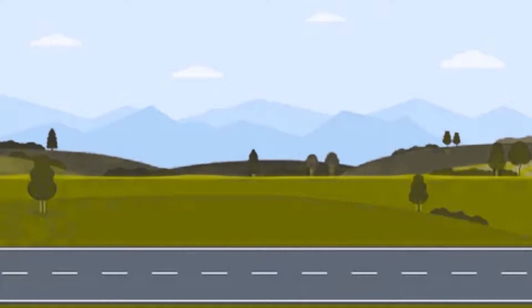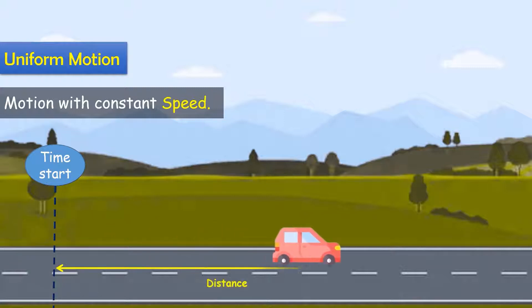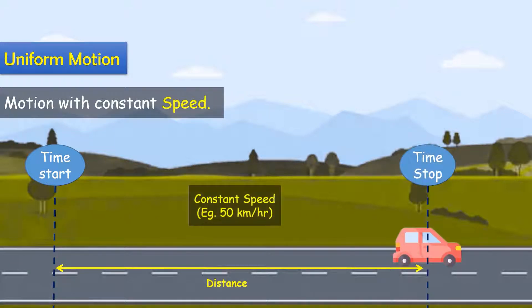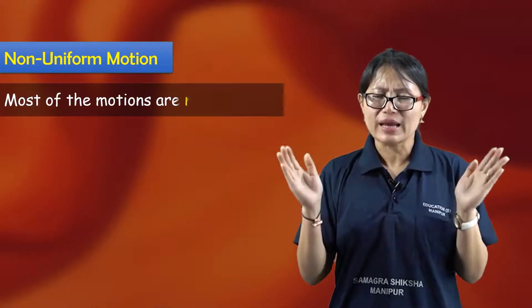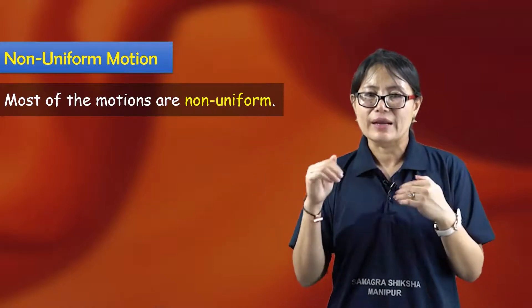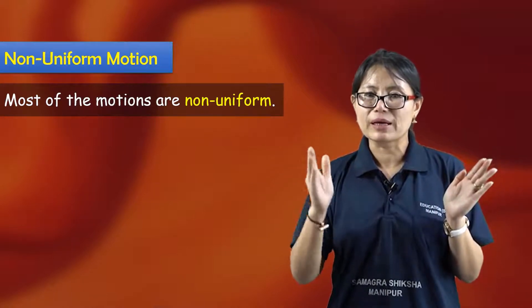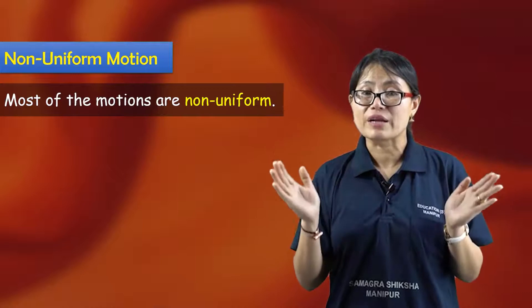We have uniform motion and non-uniform motion. Uniform motion is when the object moves at constant speed. For example, if speed is 50 and remains 50 throughout, that is uniform motion. When speed changes, that is non-uniform motion.